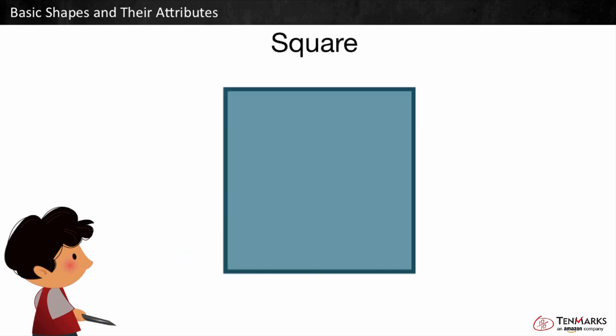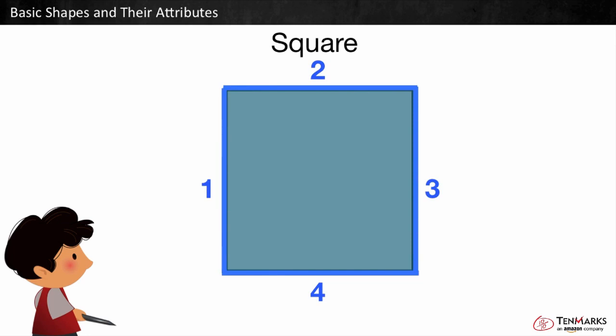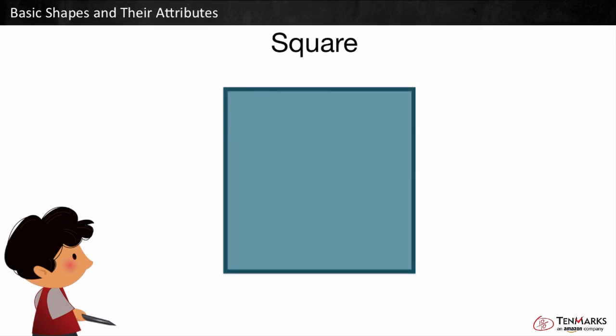This is a square. It is a closed shape that has one, two, three, four straight equal length sides. And one, two, three, four corners. A square has sides and corners that are all the same size.